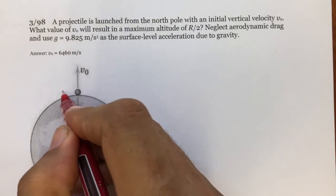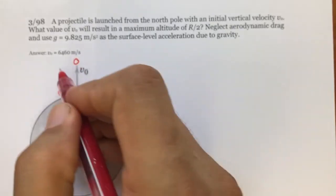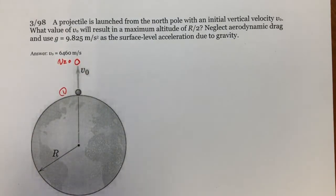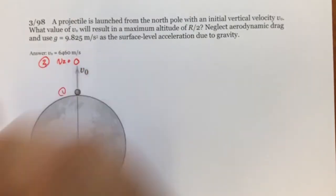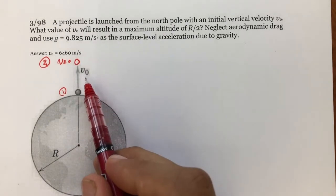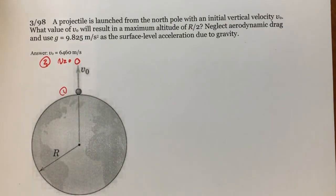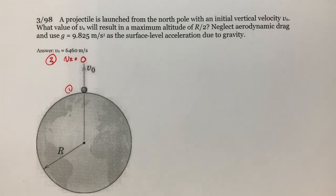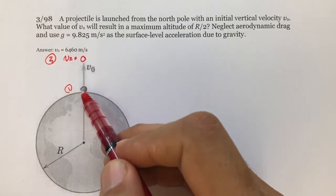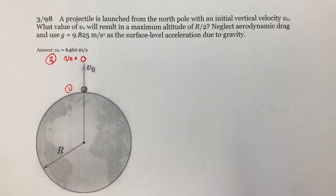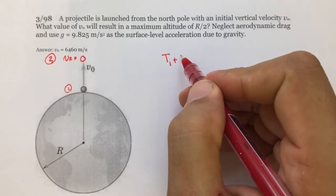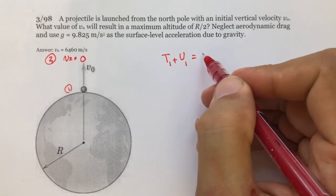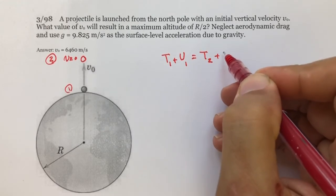Initially the projectile is at the surface, and finally it goes up to a height of R/2, where the velocity at that point is equal to zero. We want to find the required initial velocity. Since there is no energy loss, the energy at the beginning equals the energy at the end: kinetic energy at the beginning plus potential energy at the beginning equals kinetic energy at the end plus potential energy at the end.